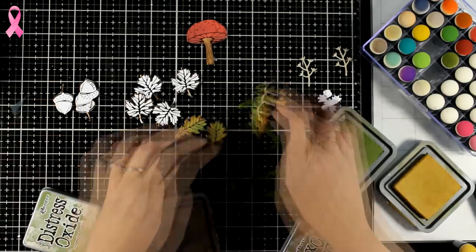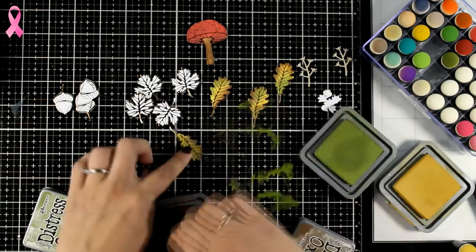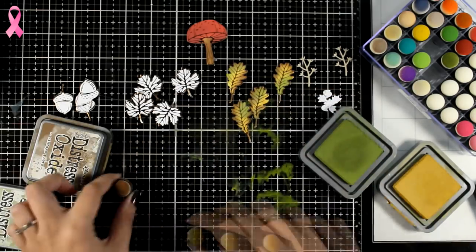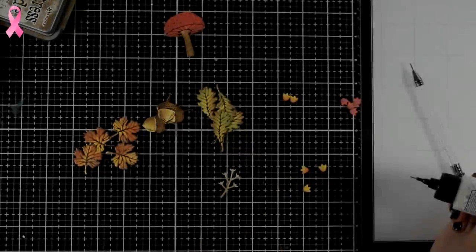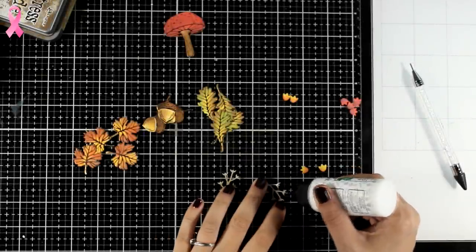Once you color everything, make sure to go over them with a clean towel or a paper towel, just to make sure that you don't have any extra ink laying on top of your foiled areas.